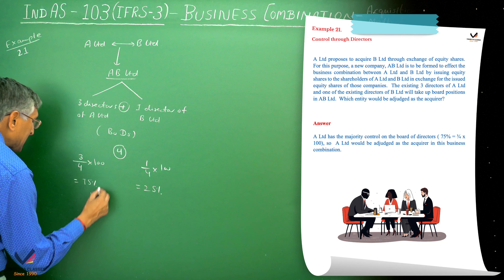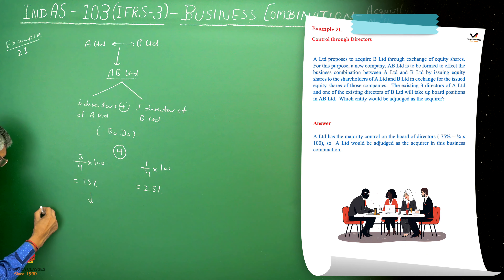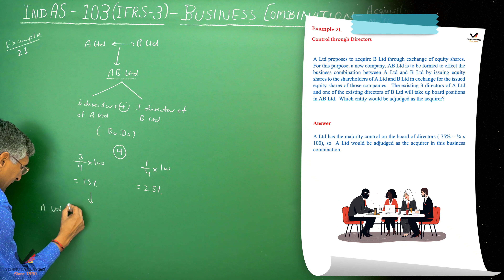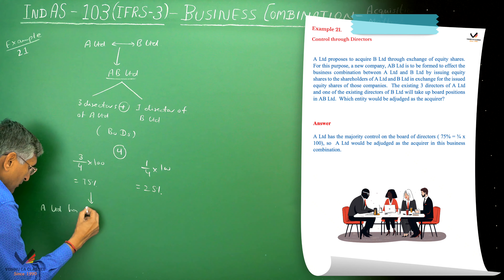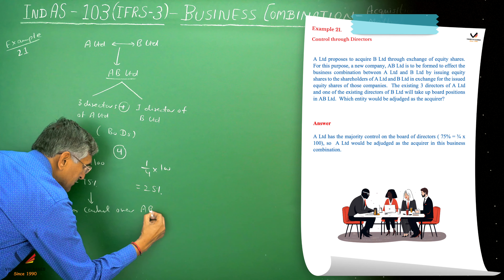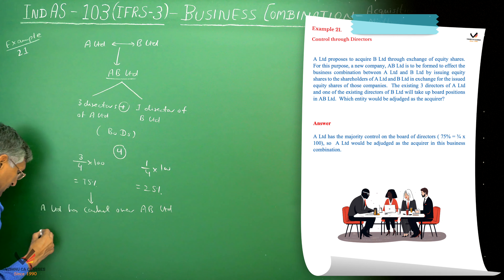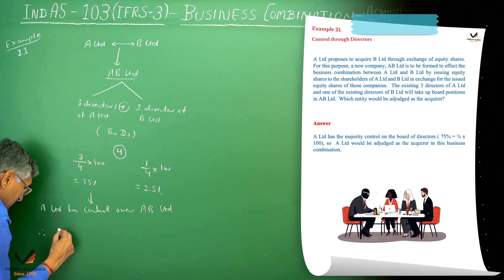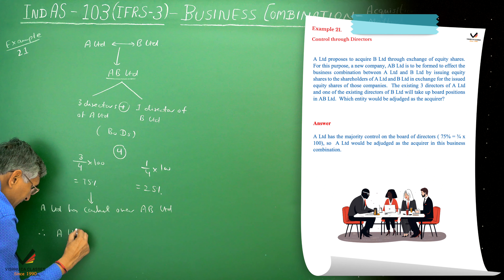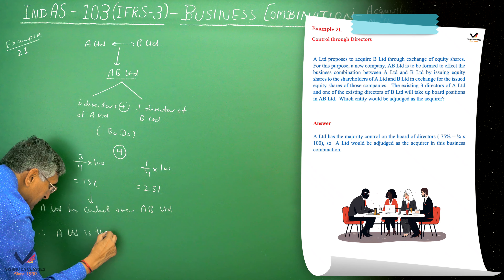A Limited has control over AB Limited. Therefore, A Limited is the acquirer in this case.